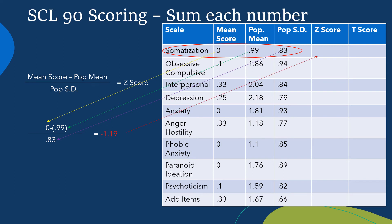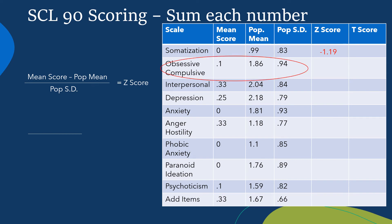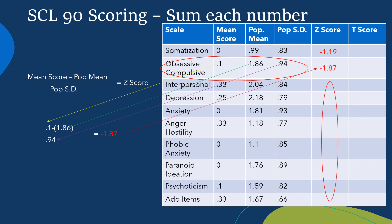Let's look at the next one — obsessive-compulsive. Obsessive-compulsive has a mean score of 0.1 and a population mean of 1.86. So we plug in those numbers: 0.1 minus 1.86, then divide by the population standard deviation of 0.94, and that gives us a z-score of negative 1.87. You just go through the whole chart filling it out exactly like that — subtracting the population mean from the mean score and dividing by the population standard deviation.